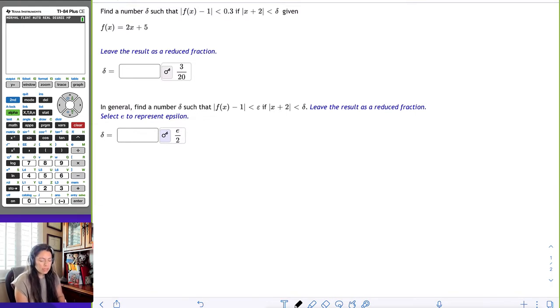When they give us and restrict us an epsilon, that means they're telling us how far from our L so that we stay within a delta distance of a. This means that we need to find that perfect delta so that we can stay perfectly within 0.3 of our L.